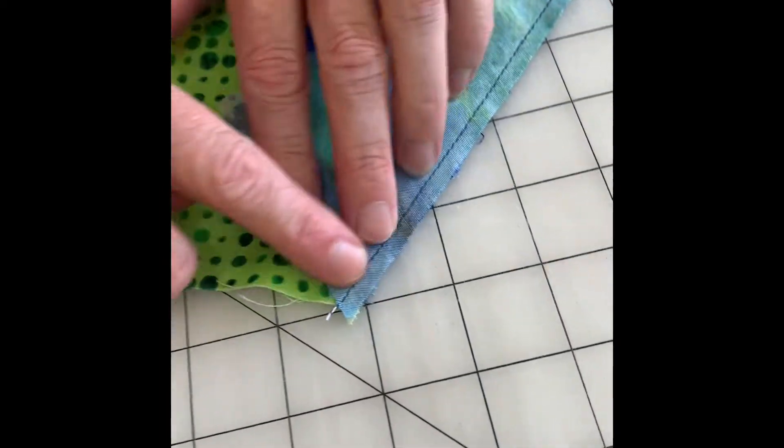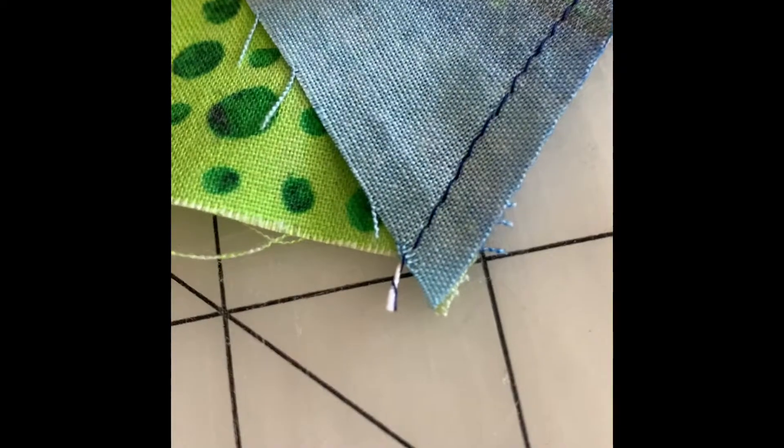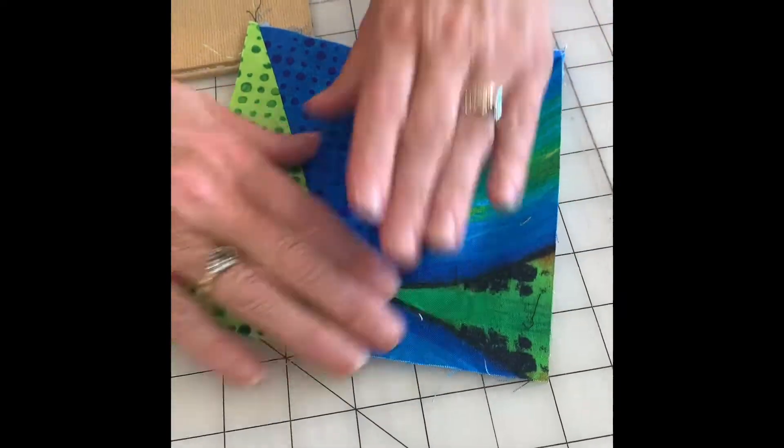So when you're doing your seam, if you end up at that little notch, then you know you've done it right. So there's the little notch right there. And then you will press this open. And that is step two. This is your block. You do this four times.